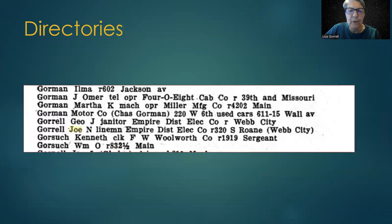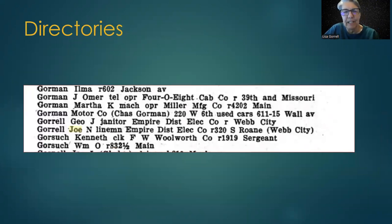If your ancestor appears at the same address over many years in a city directory, that may point to home ownership. But renters tended to move more often.